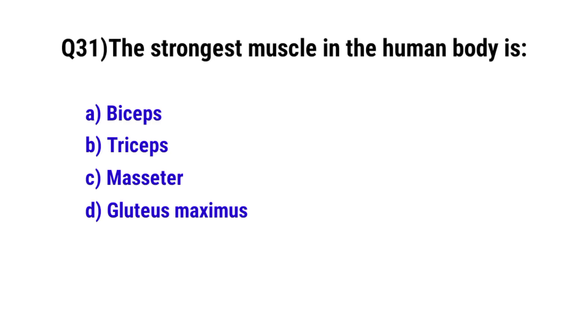Question No. 31: The strongest muscle in the human body is? The correct option is C: Masseter.